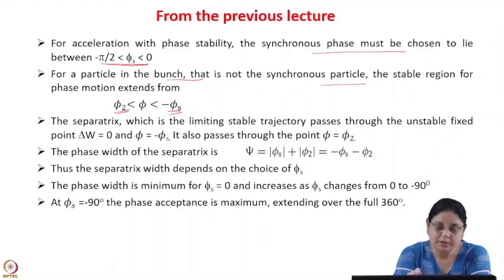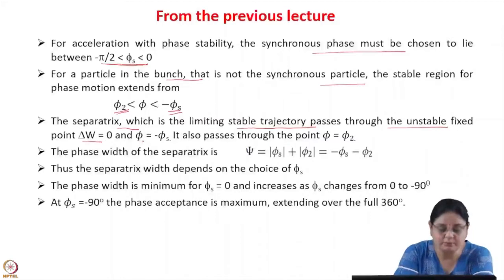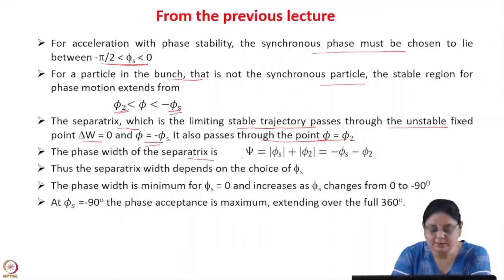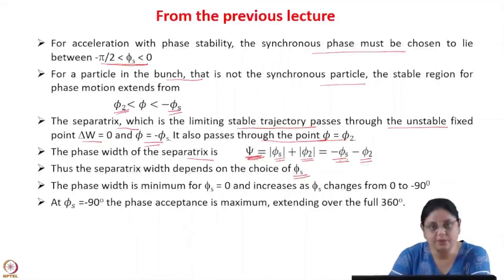This phi 2 can be calculated from the value of phi s. The separatrix, which is the limiting stable trajectory, passes through the unstable fixed point at delta w equal to 0 and phi equal to minus phi s, and it also passes through the point phi equal to phi 2. The width of the separatrix is psi, which is the modulus of phi s plus the modulus of phi 2, which comes out to be minus phi s minus phi 2. The phase width depends upon the choice of the synchronous phase.